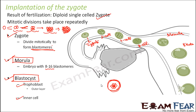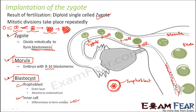The trophoblast, being the outer layer, attaches itself to the endometrium — the innermost layer of the uterus. The inner cell mass differentiates to form the embryo. So once attached to the endometrium, outside you have the trophoblast connected to the uterus and inside you have the embryo. This is how implantation takes place — the single-cell zygote gradually got converted into an embryo implanted in the uterus.